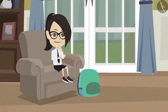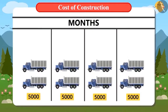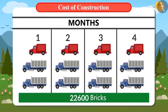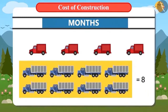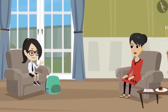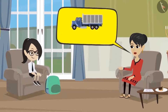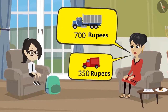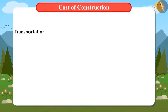This means Vandana's mum was right. If they purchase 2 big trucks and 1 small truck of bricks every month, then 22,600 bricks can be purchased in 4 months. So they have to purchase a total of 8 big trucks and 4 small trucks over 4 months. Vandana asks her mom how much it costs to transport bricks in big and small trucks.